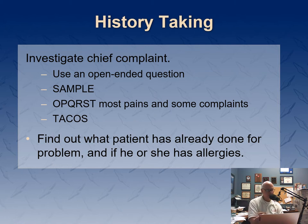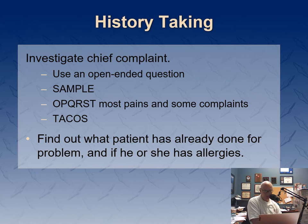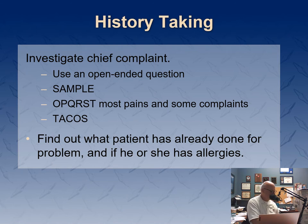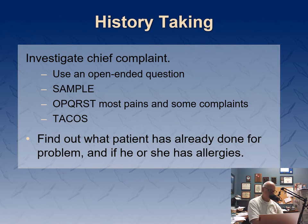TACOS is another useful tool. T is tobacco, A is alcohol, C is caffeine, O is other drugs or over-the-counter medications, and S is street drugs — useful for identifying cocaine or marijuana use. Also ask about surgical history and family history, since pulmonary emboli have significant risk factors. Ask how the patient was yesterday and when they were last symptom-free.